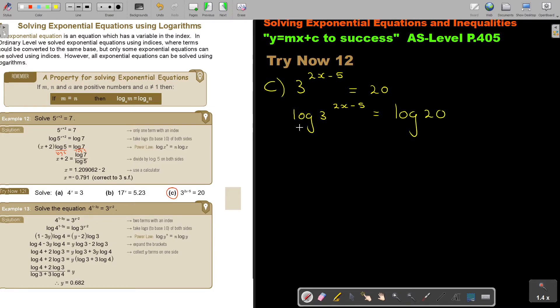Then do the power law, take this to the front and put it in brackets. Divide by log 3 on both sides, and these cancel. I have 2x minus 5 equals log 20 divided by log 3.